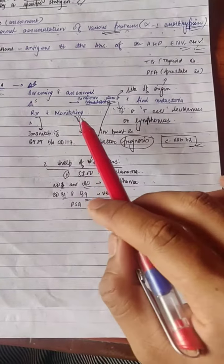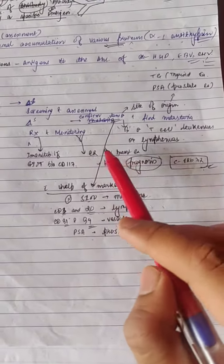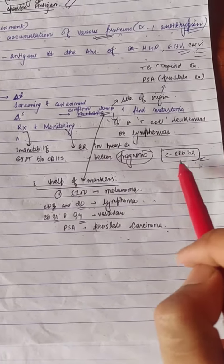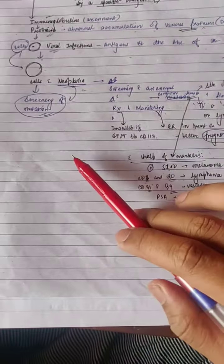For monitoring breast cancer, estrogen receptor positive indicates better prognosis, while CRVB2 indicates negative prognosis.